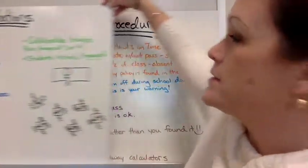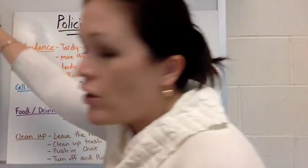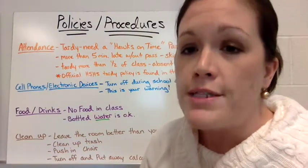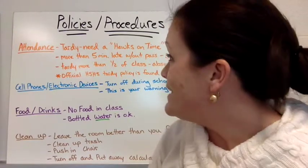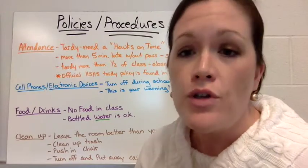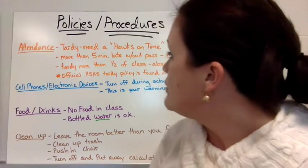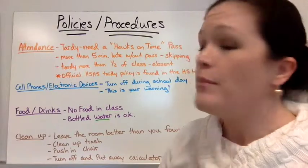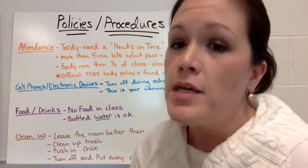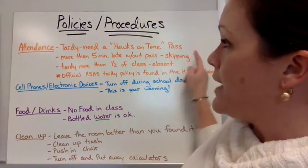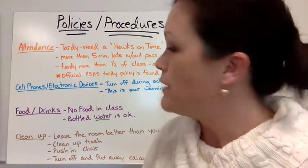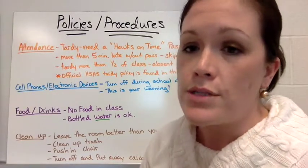There are a few policies and procedures we need to go through to make sure we're all on the same page. For attendance: when you are tardy, you will need to bring a Hawks on time pass. Most of you know this, but just in case you don't, you have now been informed. If you are more than five minutes late without a pass, I'm supposed to write you up for skipping. That's the rule of the school and it's going to be the rule of this class. So try not to be more than five minutes late, and if you are late, bring a Hawks on time pass so that you can get here and we can get started on time.